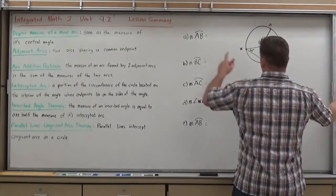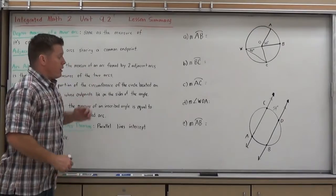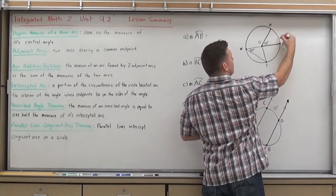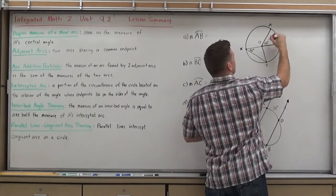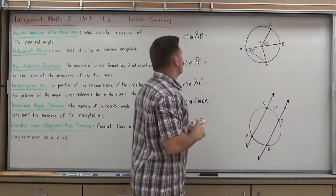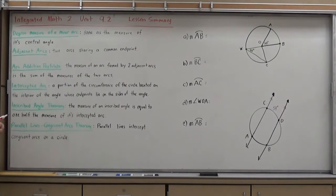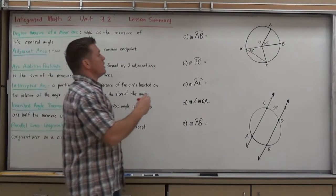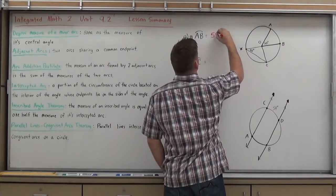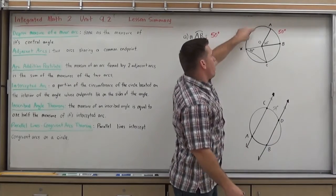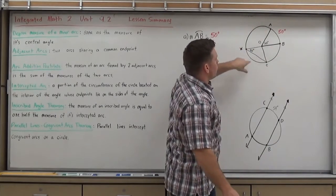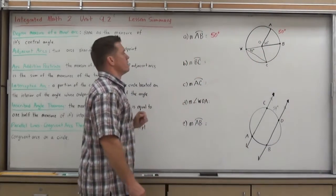So let's start by finding the measure of arc AB. Arc AB is right here. It is formed by the central angle AOB. Angle AOB is 50 degrees. And the measure of a central angle is always equal to its arc. So that should be exactly the same 50 degrees. Things to keep in mind. If you do happen to find all the arcs in the problem, they should always add up to 360, the total amount of degrees in the circle.